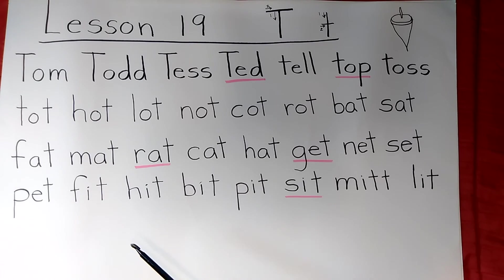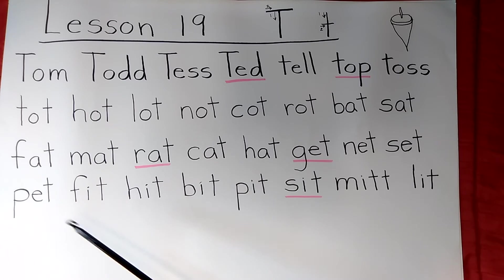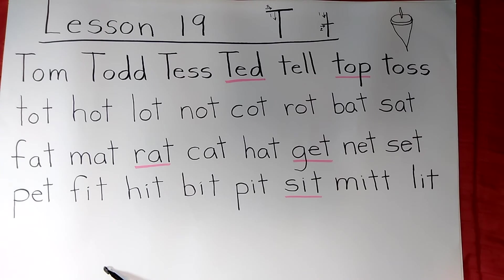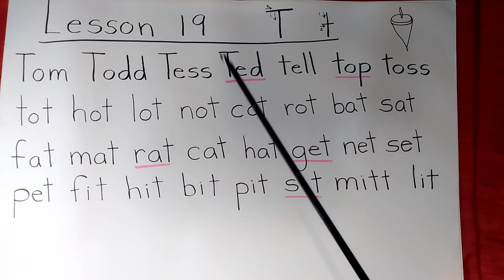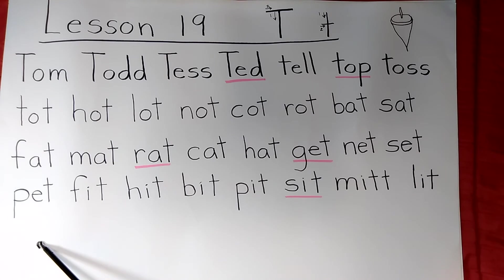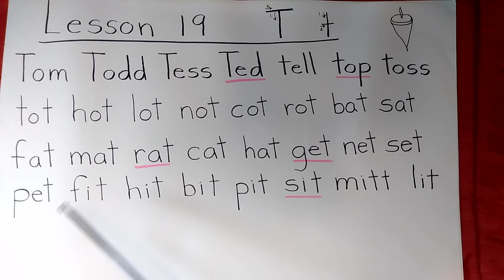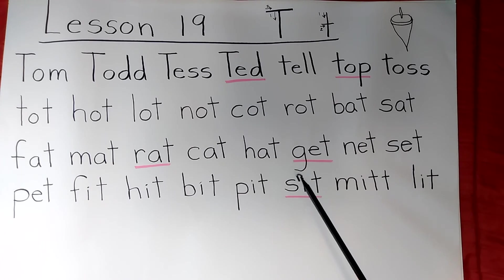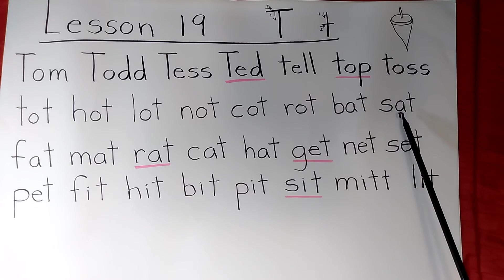Now we're going to do the spelling test. These T words — if you were to do all of them and you're doing cutouts, I counted 23 letters that you'd have to pull out. Of course, capital T for any names, two small T's, two small D's, two small L's, and a whole bunch of other letters. If you're only using the five I've underlined, or maybe you want to pick out five, you don't have to use as many. Press pause for the spelling test.